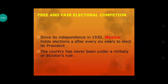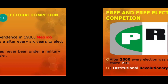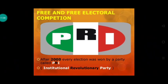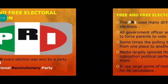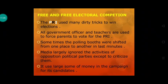Now let's look at Mexico. Mexico got independence in 1930, and since then elections have been held every six years. Mexico ek South American country hai aur 1930 mein azadi mili, tab se har 6 saal baad yahan pe elections hote hain. The country was never under military or dictator's rule. Yet before 2000, every time the elections were won by the PRI — Institutional Revolutionary Party — ek political party ka naam hai Mexico mein. Iska dhyan rakhna: Institutional Revolutionary Party.